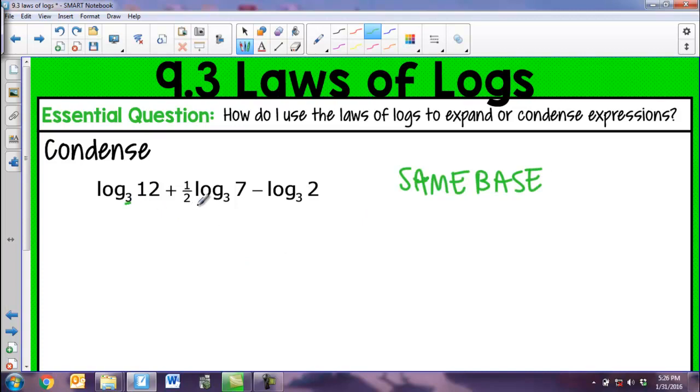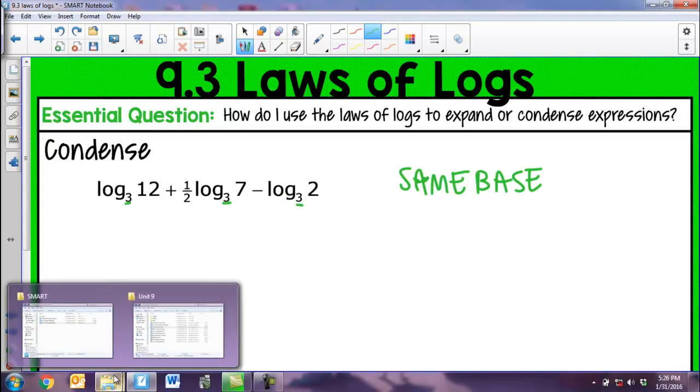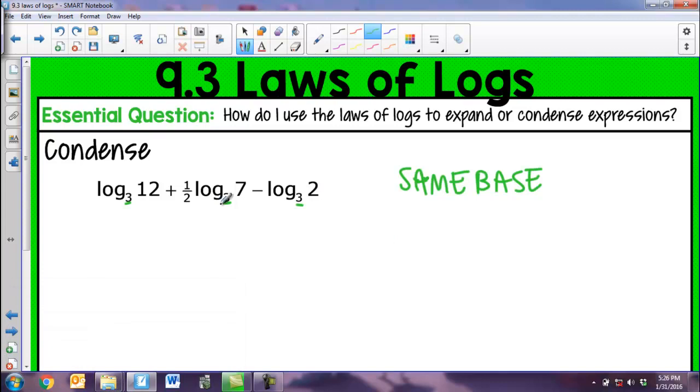I have to have the same base in order for me to do anything. And so this is good. We have a 3, a 3, and a 3. So I can condense this down. So if I look right here, the first thing I always do is move these coefficients and make them into exponents. So right here I would have, I didn't do anything in the first term, and this guy is equivalent to log base 3 of 7 to the 1 half, which we know anything to the 1 half power is actually a square root.